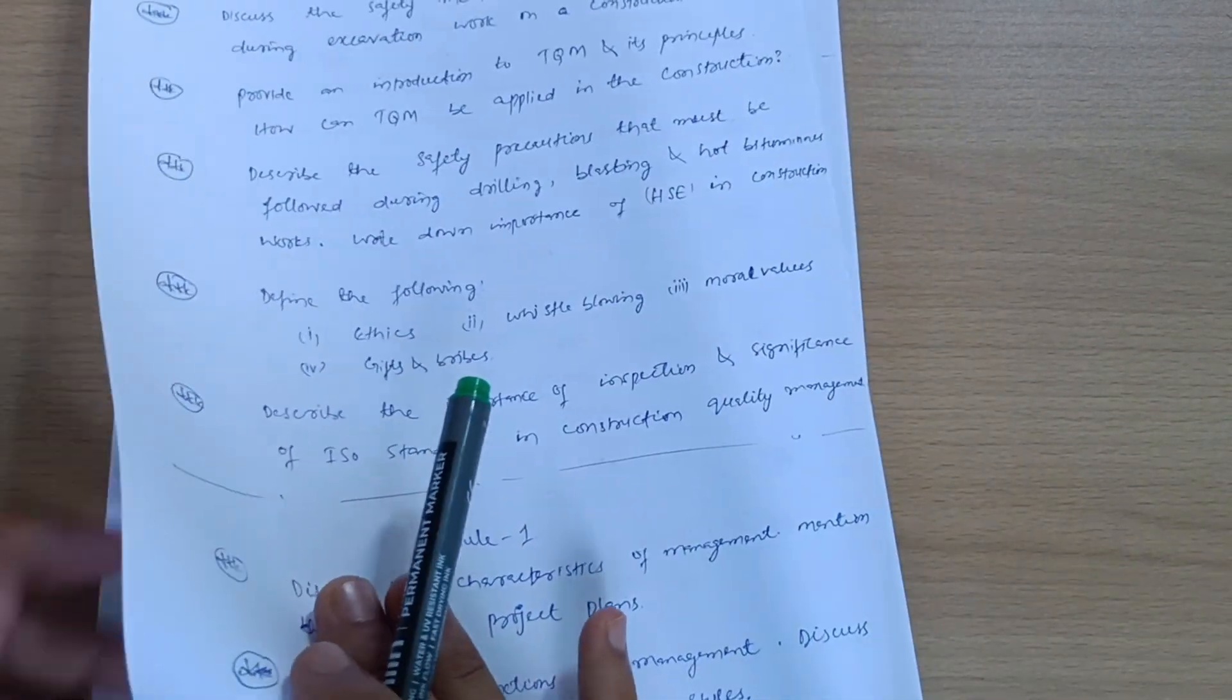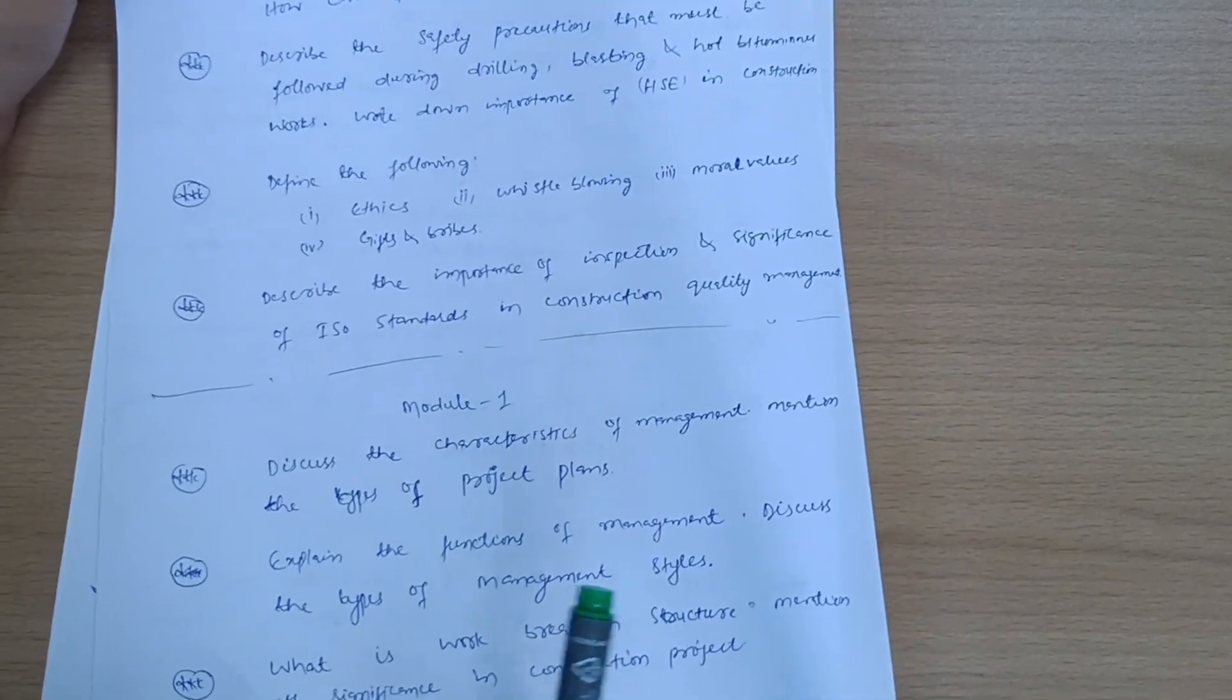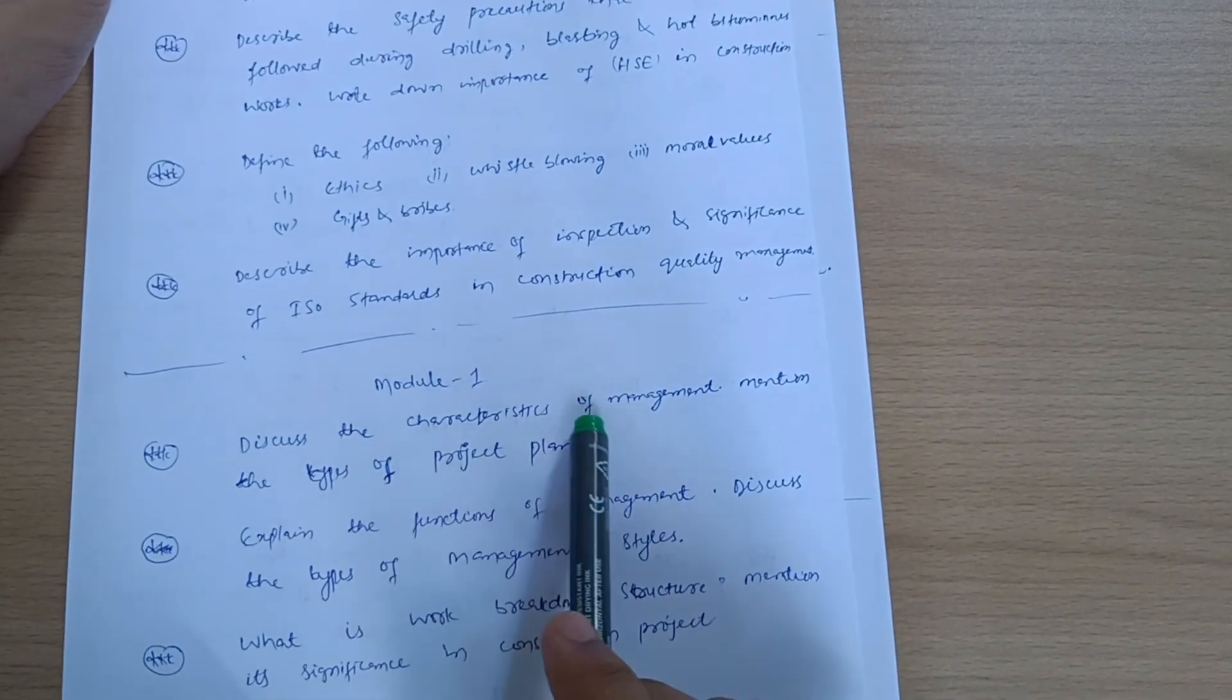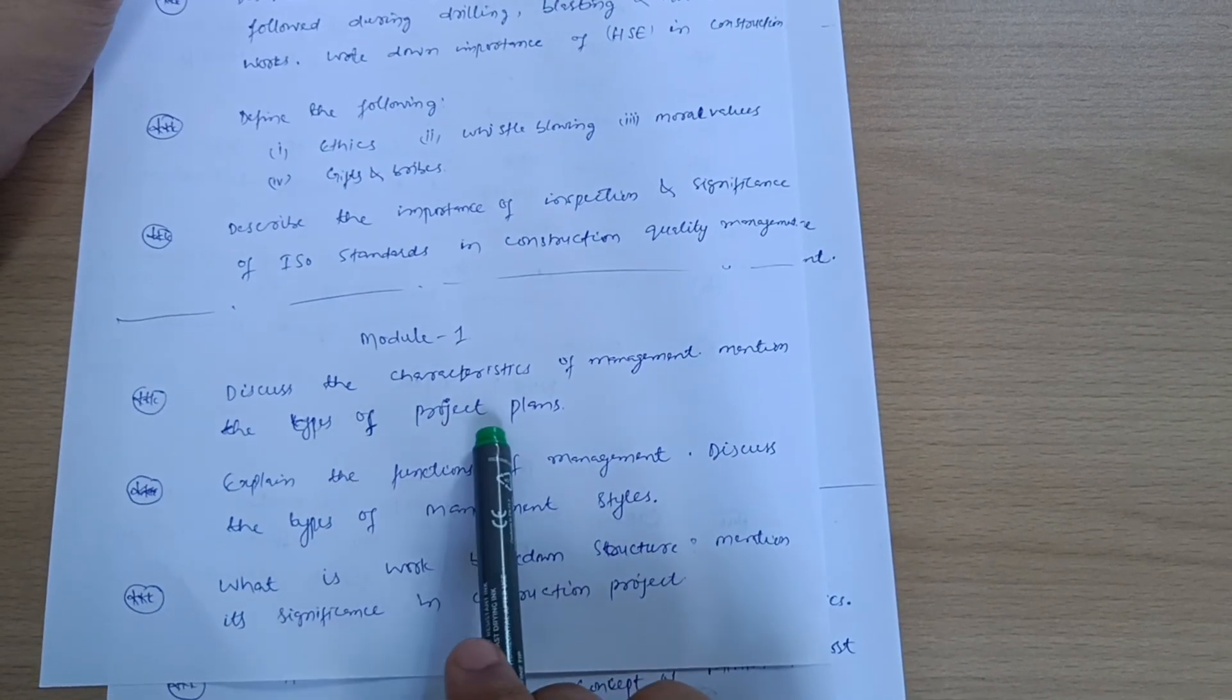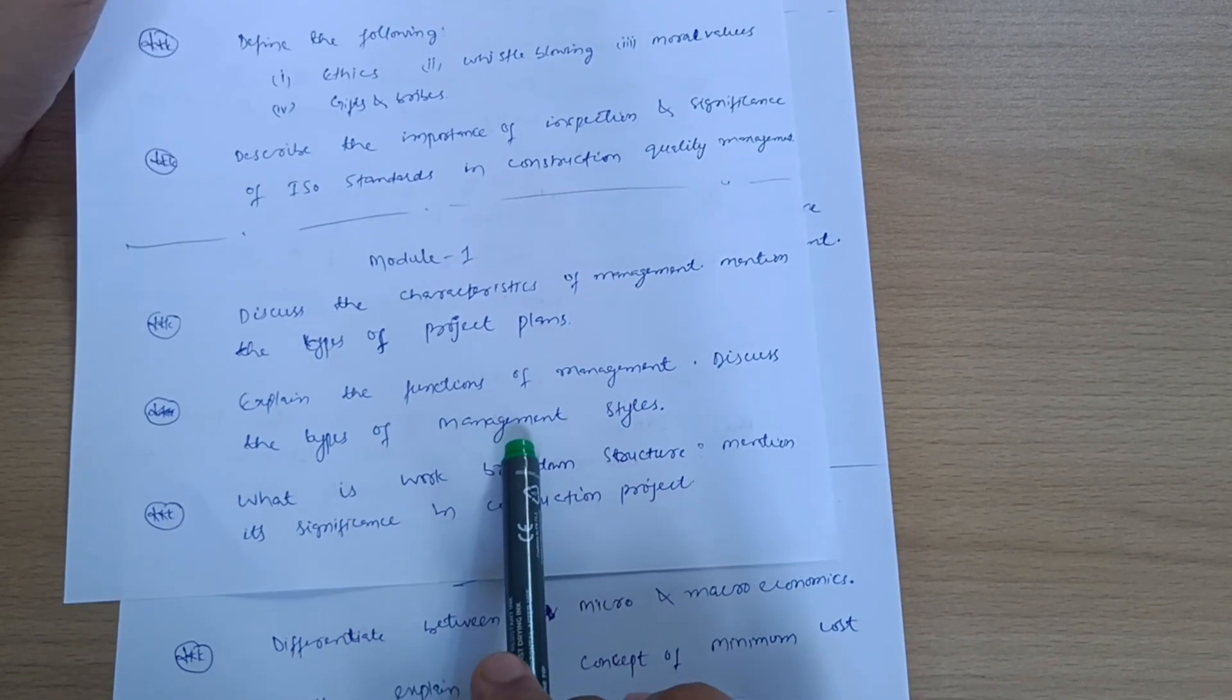Now let me discuss Module 1, in which some numericals are also there along with theoretical portions. Discuss the characteristics of management. Mention the types of project plans. Explain the functions of management. Discuss the types of management styles.